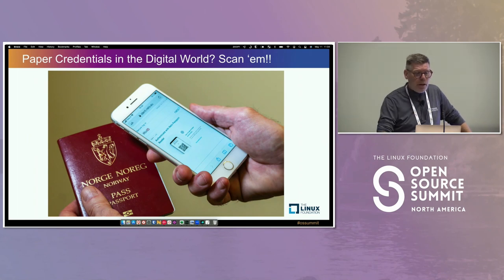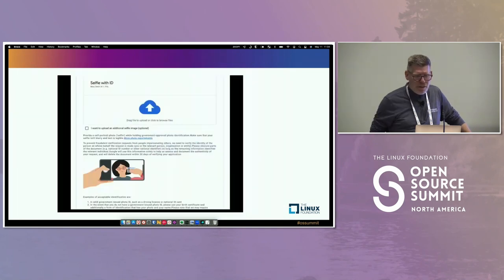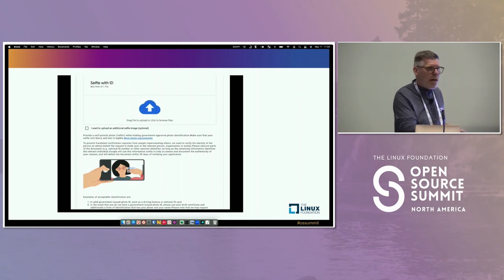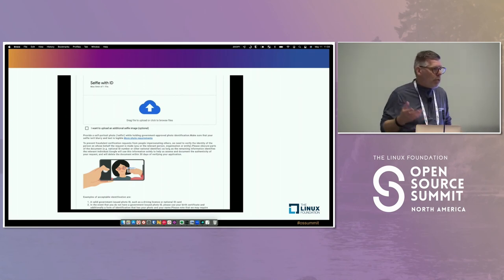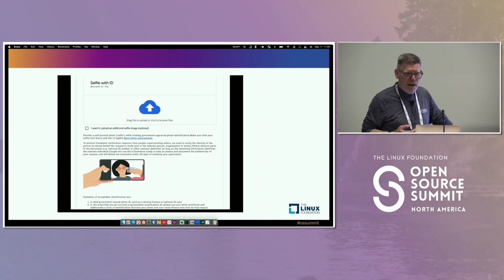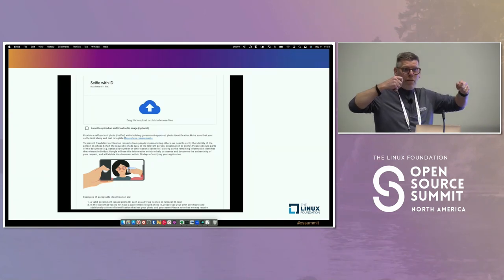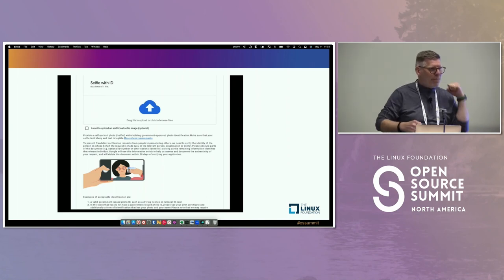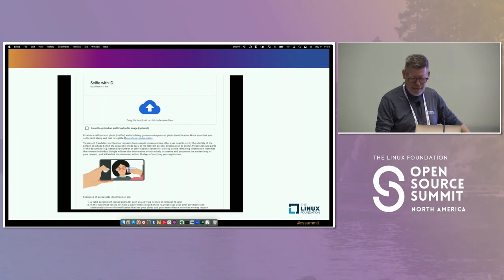Paper credentials are what we're using in the digital world right now. We scan them and send them off. This is a screenshot of Google's identity process for some program where they ask you to take a selfie while holding your driver's license — your government ID. And that's good enough: it must be you because that looks like you in the picture. There's no way you could have faked that.